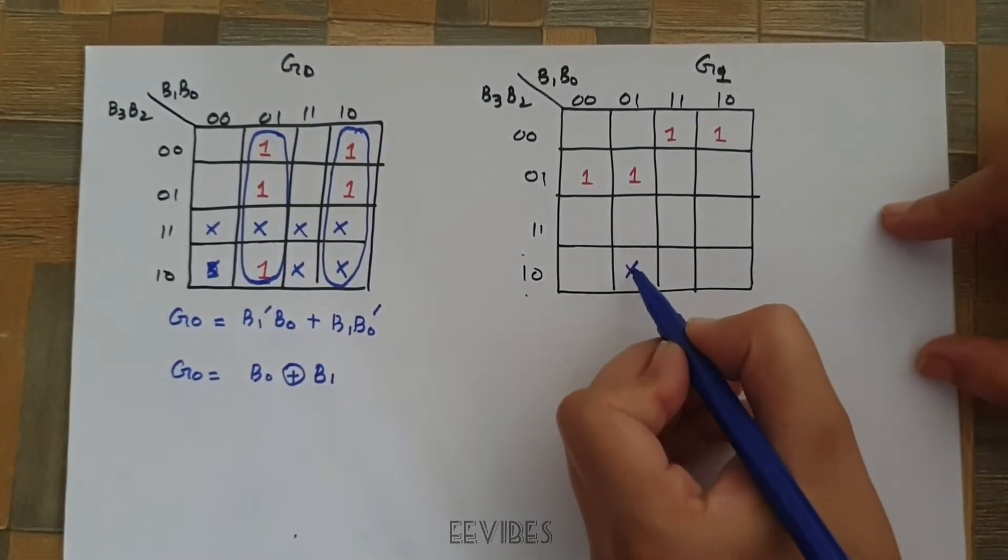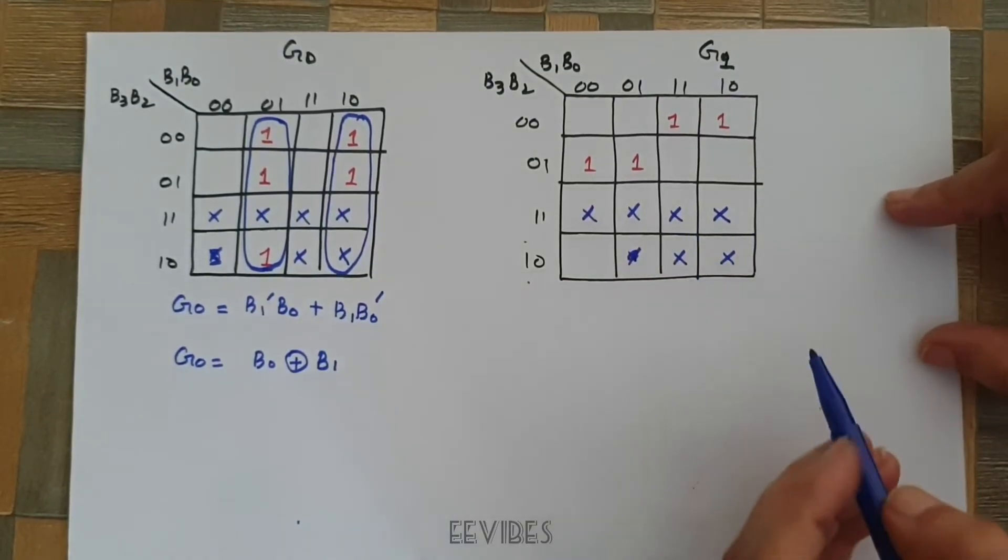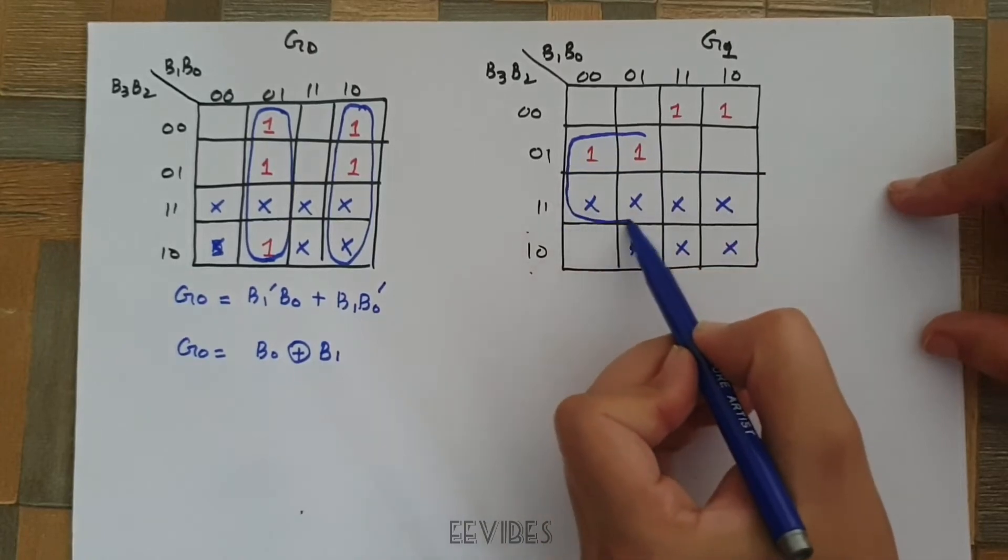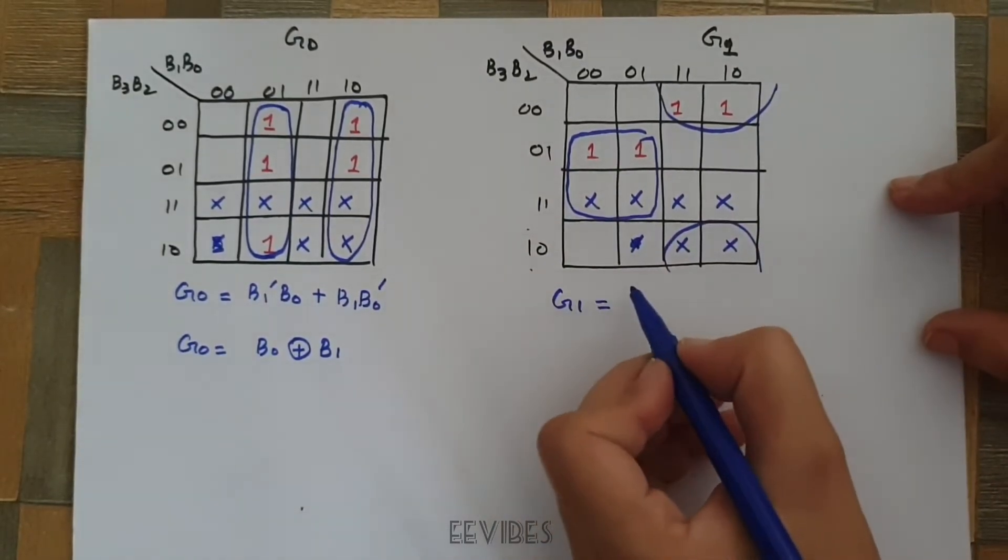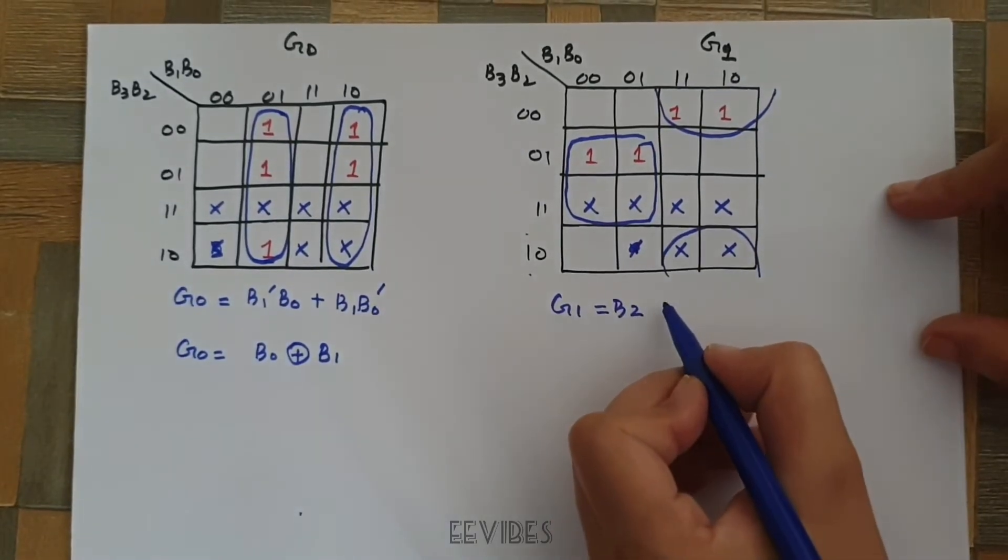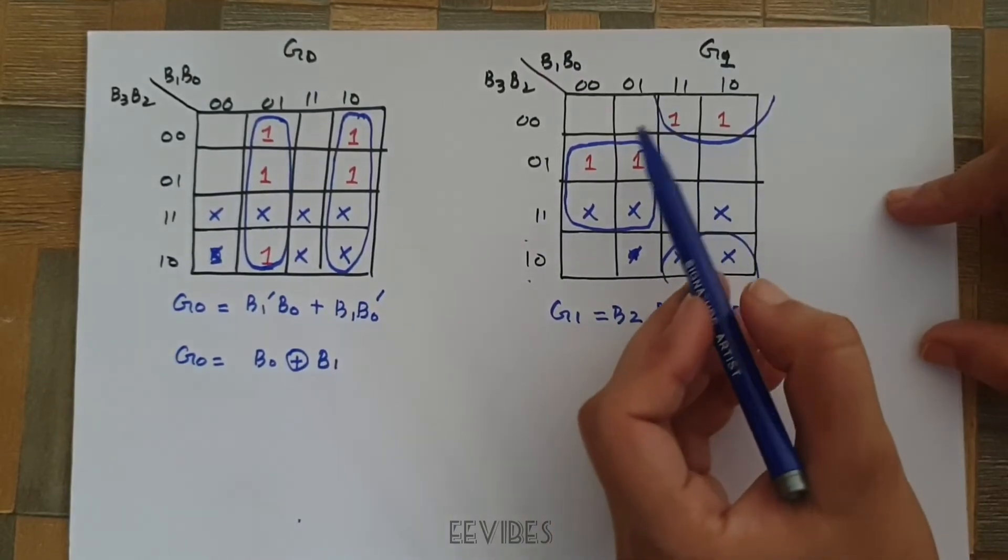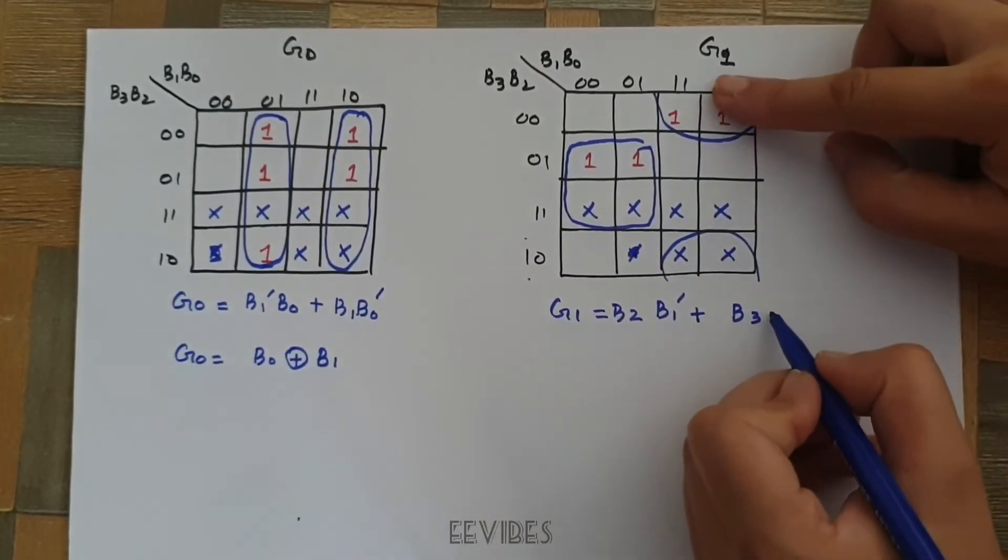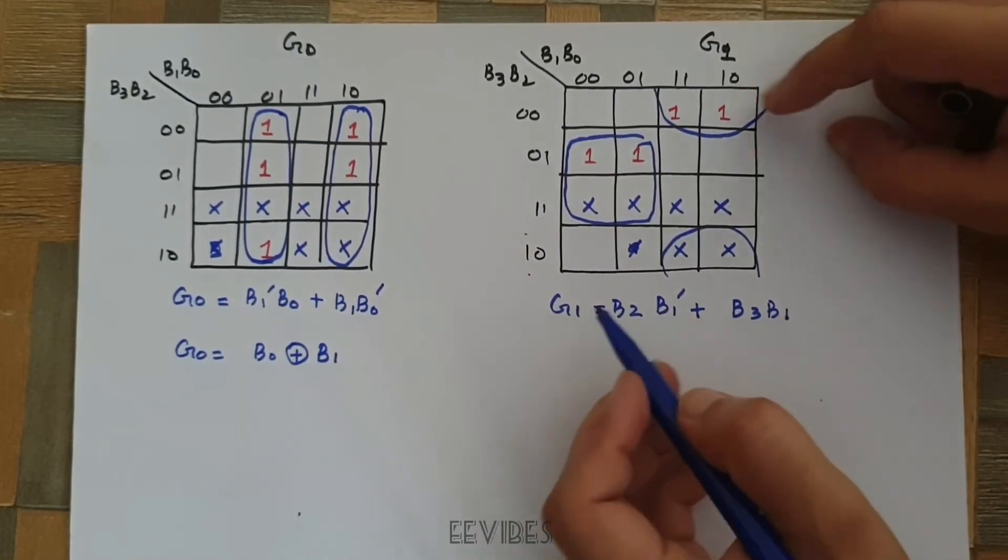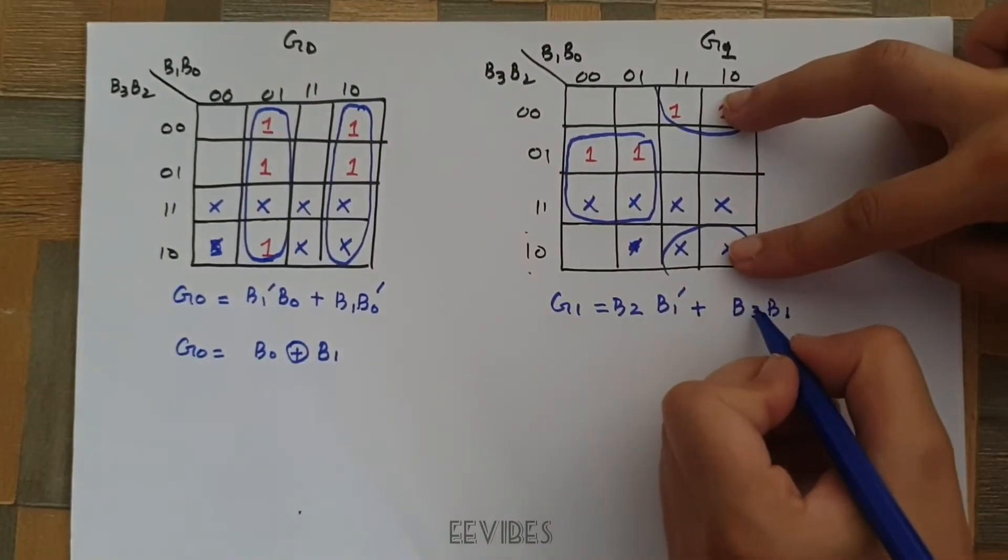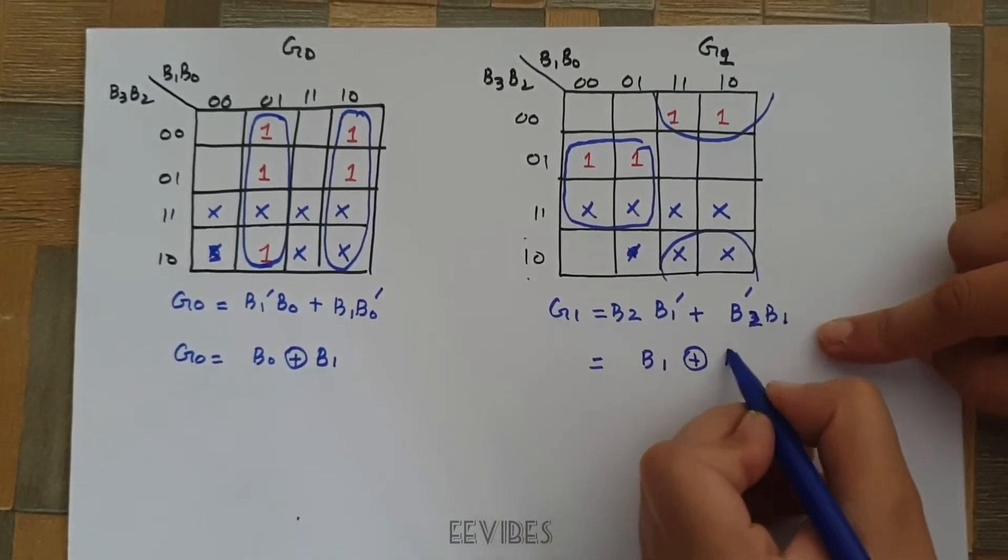Now, again, let's place the don't care conditions over here. So, these were the don't care conditions for the G1 and our task is to combine or simplify the expression by merging these 4 squares. And hence, G1 will be equal to... let me see again, I have combined these 2 boxes. So, it will be equal to B2 complement B1 which is again equal to B1 XOR B2.